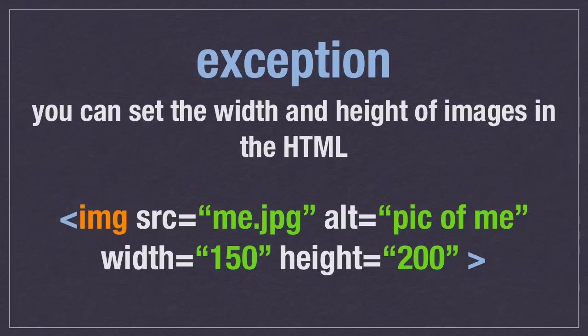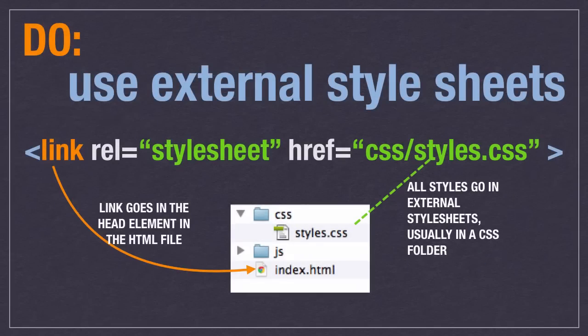One exception in terms of width and height is with images. You can set the width and height of images in the HTML, and that's considered okay. In certain cases it can also help speed up the rendering of the page, because the browser knows how big a space to leave for that image. It renders all your HTML text first, then asks for images second, so if you give it the width and height, it can place the image correctly. If you don't, it has to figure out the size later.